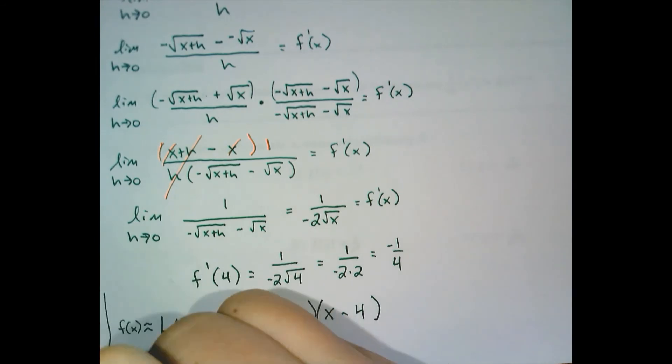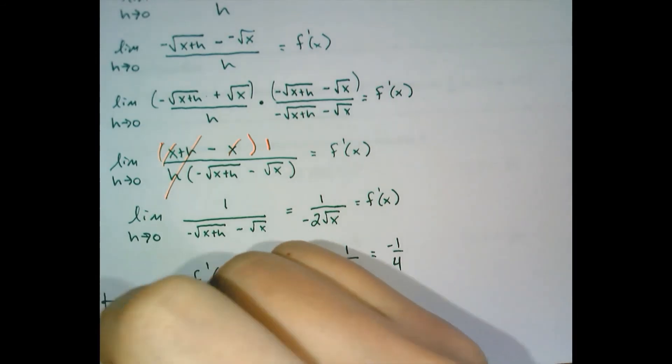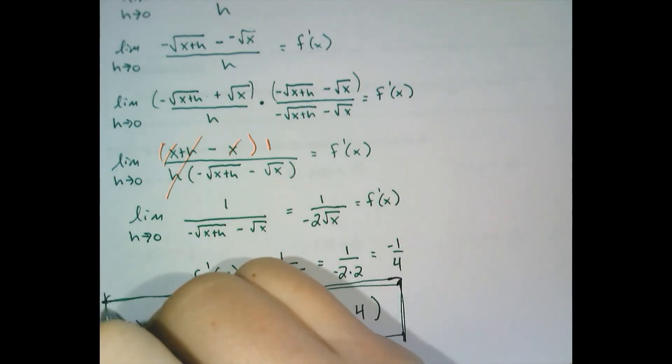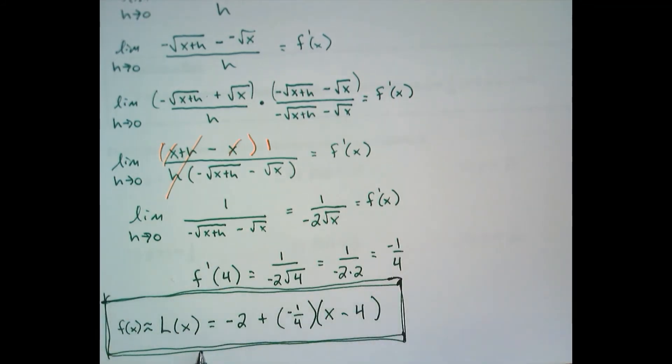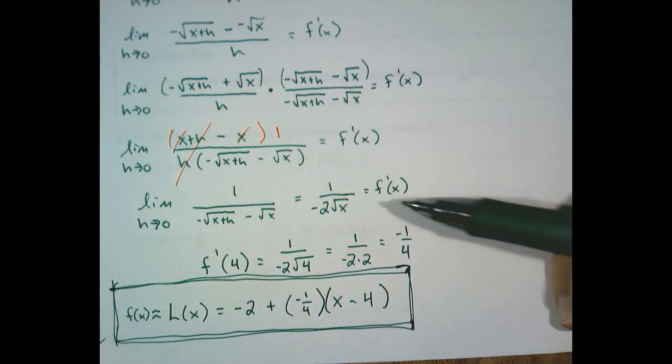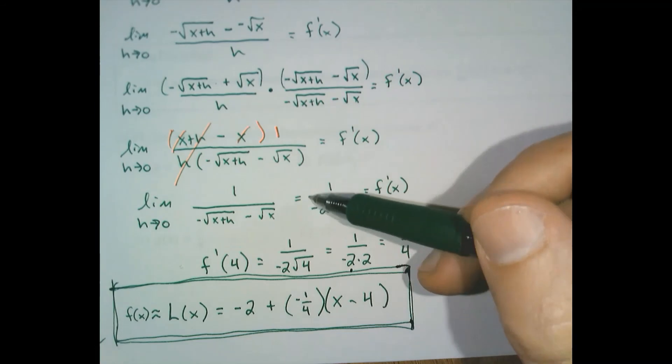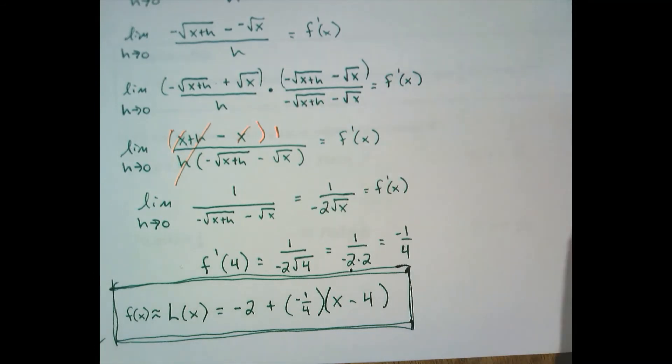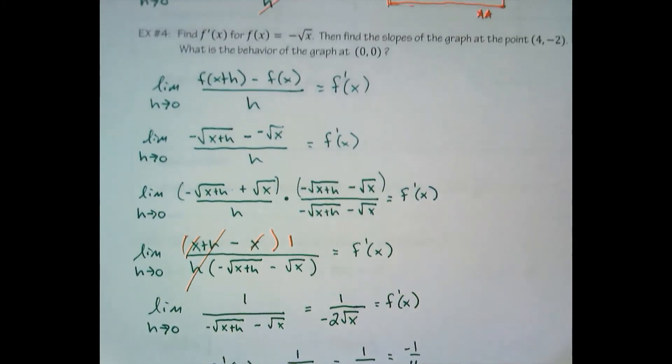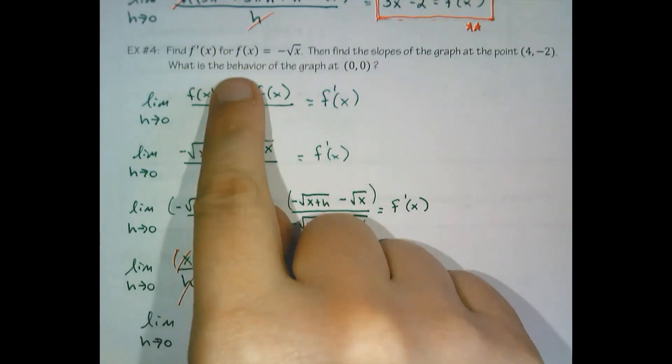So this is the process of finding the derivative and finding the tangent line equation at that center. Oftentimes we want to find the tangent line, but sometimes there's other things we want to do with the derivative. Finally, they ask a follow-up question. What is the behavior of the graph at 0, 0?